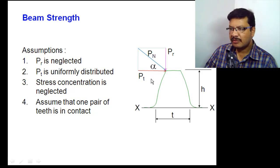So to derive the equation for beam strength, I am taking these assumptions. This Pr radial component is neglected because the stresses induced due to Pr is very very less. And Pt is uniformly distributed throughout the face width. The stress concentration is neglected. Assume that only one pair of teeth is in contact, because there are two pairs of teeth in contact. But we are assuming that only one pair is taking the total load such that our design will be more safer.